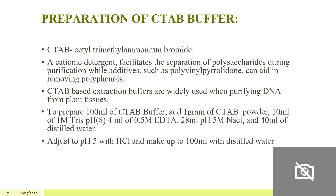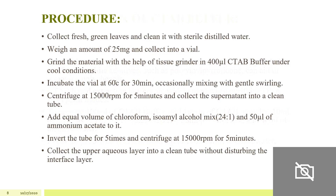CTAB (cetyl trimethylammonium bromide) is a cationic detergent that facilitates separation of polysaccharides during purification. Additives such as polyvinylpyrrolidone can aid in removing polyphenols. To prepare CTAB buffer: add 1 g of CTAB powder, 10 ml of 1 M Tris pH 8, 4 ml of 0.5 M EDTA, 28 ml of 5 M NaCl, and 40 ml of distilled water. Adjust pH to 5 with HCl and make up to 100 ml with distilled water.